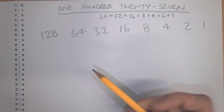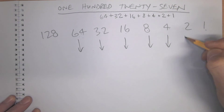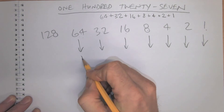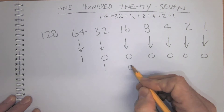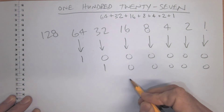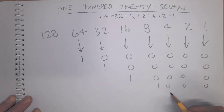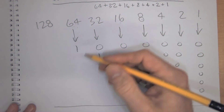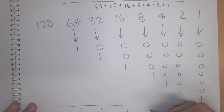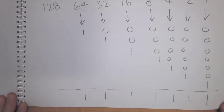So 127 means I need to add all of these numbers together — 64, 32, 16, 8, 4, 2, and 1 — which means all of those bit positions are set to 1. Adding them all up, that is 127 in binary.